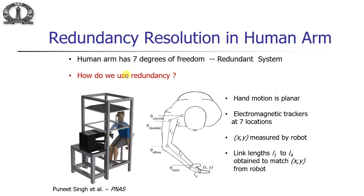Now let's see what happens in a human arm. The human arm has 7 degrees of freedom: the shoulder joint has 3 degrees of freedom, the elbow joint has 2, and the wrist joint has 2 — totaling 7, not counting the fingers. We do not need 7 degrees of freedom to position and orient an object; a PUMA or industrial robot uses only 6 joints. So the question is how do we use this redundancy in the human arm.